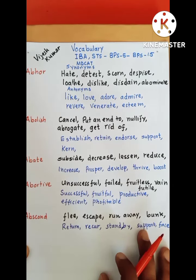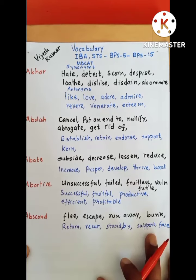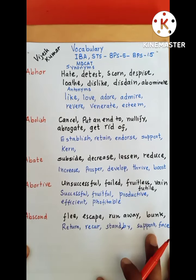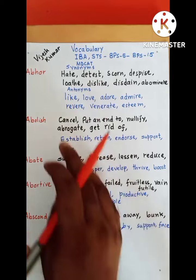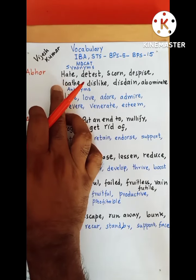I'm giving a quick overview. Abhor means nafarat karna — hate, detest, scorn, despise, loathe, dislike, disdain, and abominate. These are its synonyms.